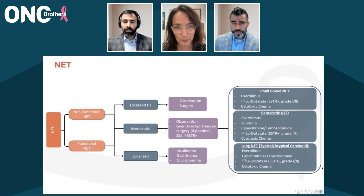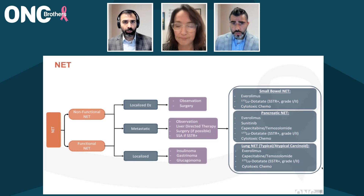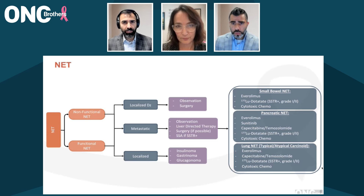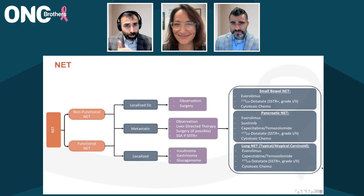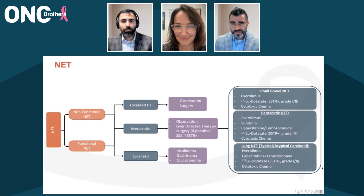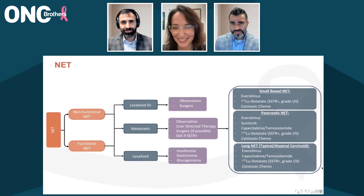Debulking surgery can also be one option — not with curative intent, but to help with symptoms. You brought up somatostatin analogs. Can we take a little deeper dive here? We have octreotide, lanreotide, different doses, how frequently we can give them. And do you give test doses? When we're using somatostatin analogs, something we worry about is that these agents can actually mimic the underlying disease. Can you touch on how you tailor when it comes to somatostatin analogs?